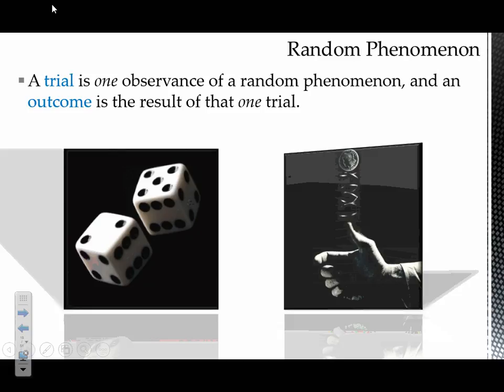With probability models, a trial is defined as something a little bit different. A trial here is kind of like our component in a simulation — it is one observance of a random phenomenon. And we call the result of that trial an outcome. So if I was flipping a coin, one flip of the coin could constitute a trial. The outcome would be however it lands — did it land heads or did it land tails? That's the actual value that particular trial takes on.